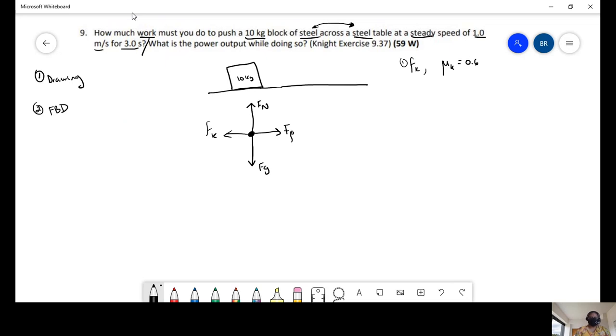We know another clue that they're giving us is that it's moving at a steady speed. So what steady speed means is acceleration equals 0 meters per second squared in the x-axis.